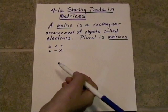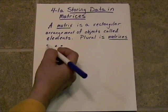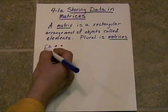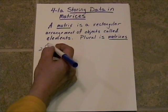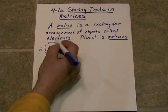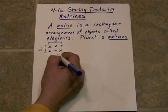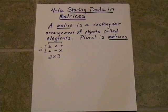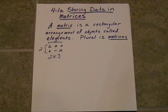So I guess you'd call this a matrix. This matrix has two rows and it has three columns, so it's called a 2 by 3 matrix. Now, in mathematics and science, most of the time our matrices are going to hold numbers or data.